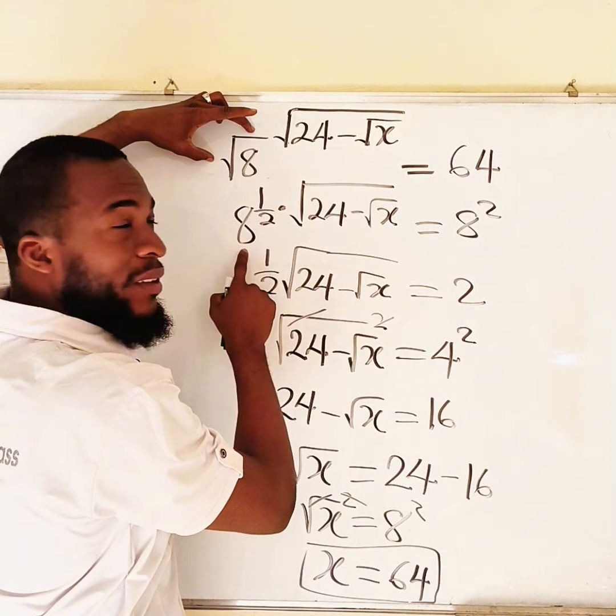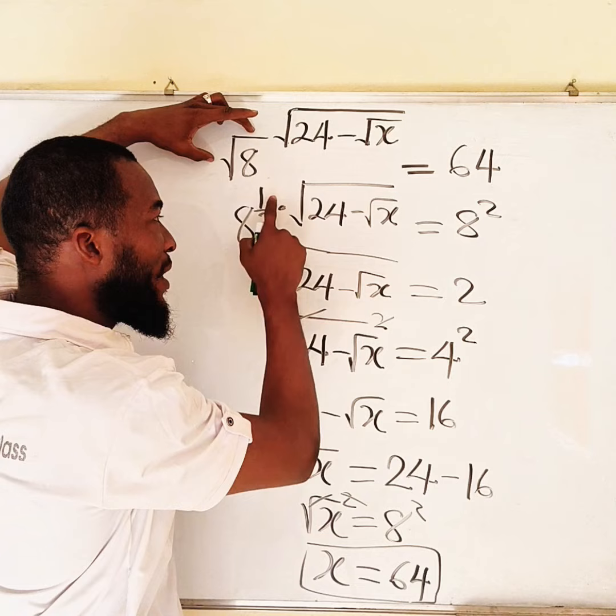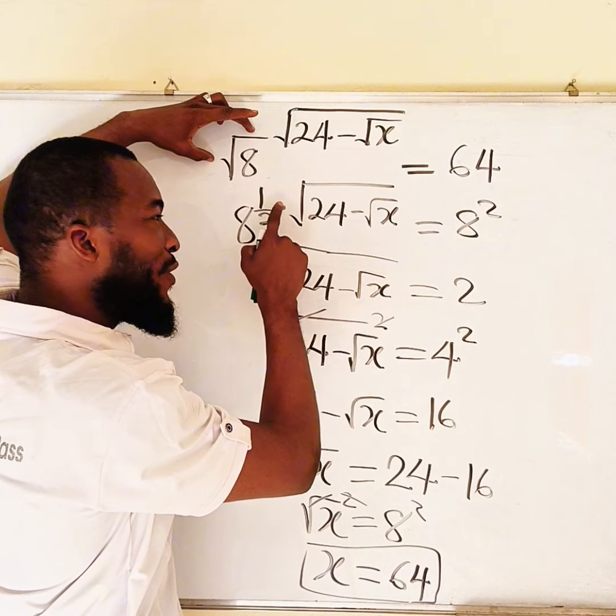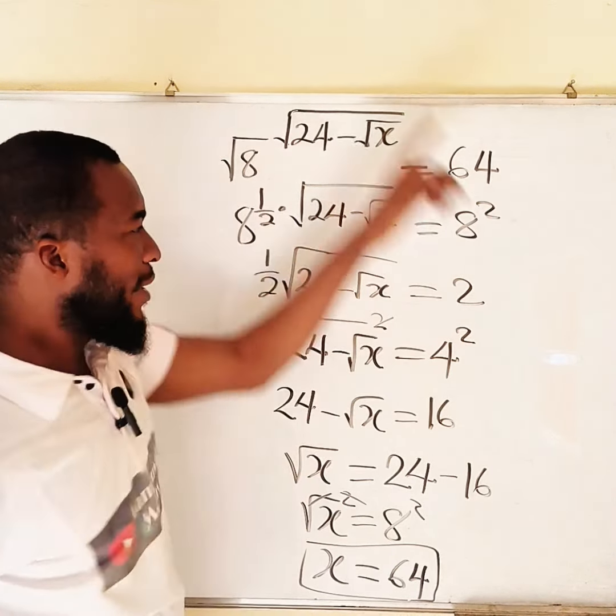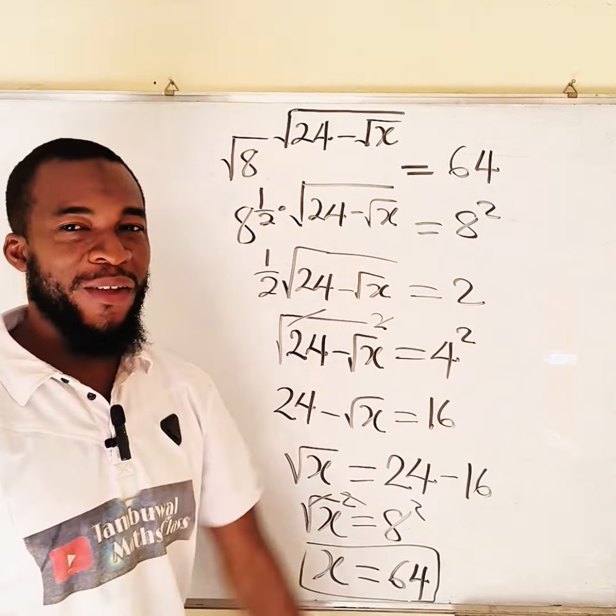Which is the same thing as 8 to the power of 1 over 2 times 4. So half of 4 is 2, and 8 squared is 64. You can even see 8 squared here, all the same. Bye-bye.